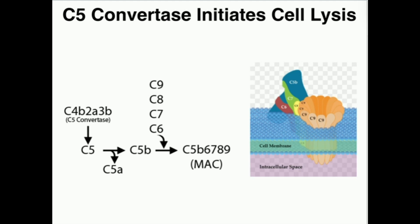C5B inserts itself into the membrane and recruits a host of other proteins: C6, C7, C8, and a bunch of C9 proteins that insert themselves into the membrane of the pathogen. The C9s not only penetrate completely through the membrane into the cytosol, but they form a pore. That pore is referred to as a MAC, or membrane attack complex. This pore allows things in and out — the cell can no longer regulate its internal environment, so it bursts and undergoes cell lysis. Membrane attack complexes kill the cell in question.